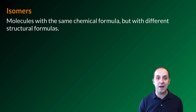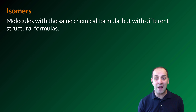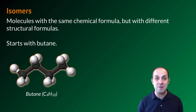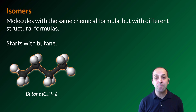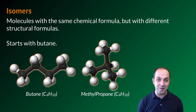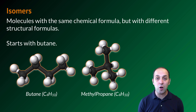Another common concept in organic chemistry is isomers — be careful not to confuse this with isotopes; it's completely different. Isomers are molecules that have the same chemical formula but different structural formulas, meaning the atoms are put together in a fundamentally different way. We don't really see this until molecules like butane. Butane, an alkane with four carbons, has the formula C4H10. Its structural isomer is methylpropane, or isobutane — also C4H10 but with the atoms arranged differently. As the number of carbons increases, the number of possible isomers increases exponentially.